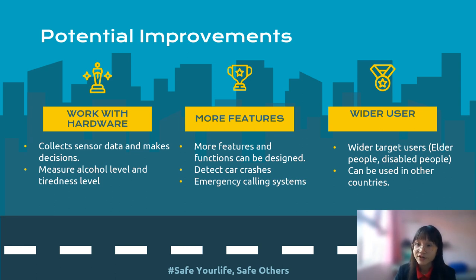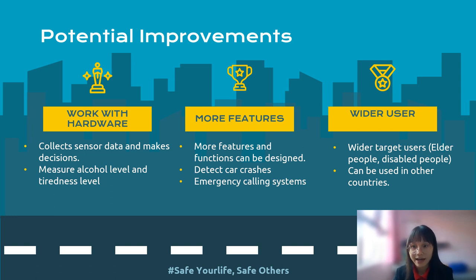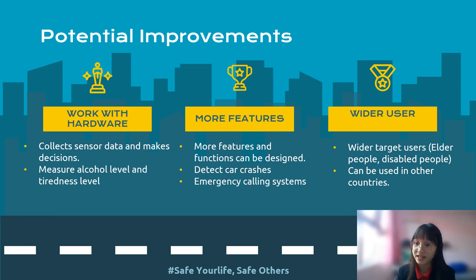There are some potential improvements that can be made. Firstly, this Safe Drive mobile app can be improved by working with hardware such as sensors and cameras. For example, an alcohol sensor can be installed in the vehicle to measure the alcohol level automatically, which could prohibit the driver from drunk driving. Moreover, a camera can be installed to measure the driver's tiredness level to prevent fatigue while driving. Next, this mobile application can continually design and upgrade more features and functions such as car crash detection and emergency calling systems.